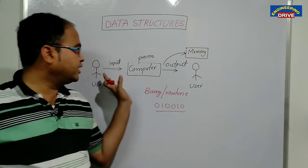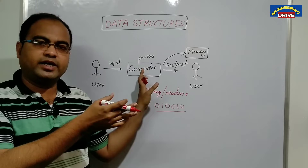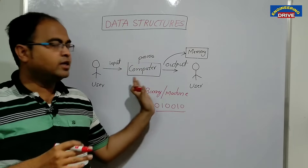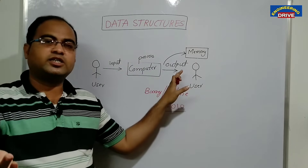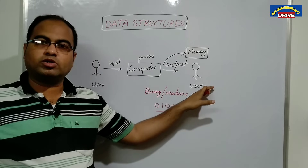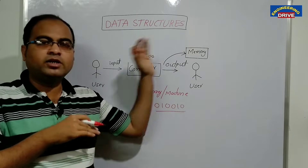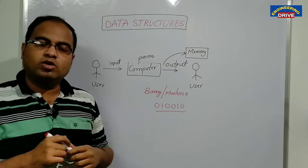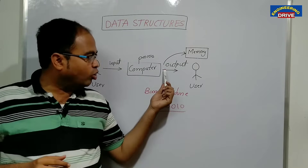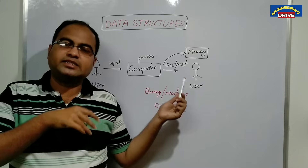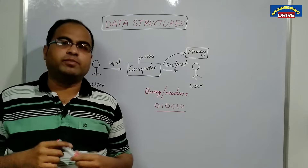A computer takes input which is in user-defined language, converts it into binary, performs processing, and then that binary data is converted back into user-understandable format as output, or that binary data is stored in memory. In order to store data inside the computer, the computer will make use of different methods.